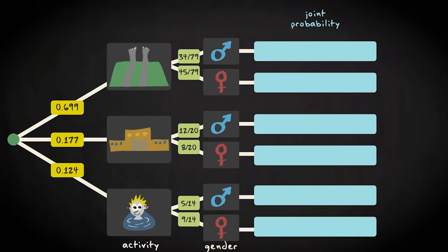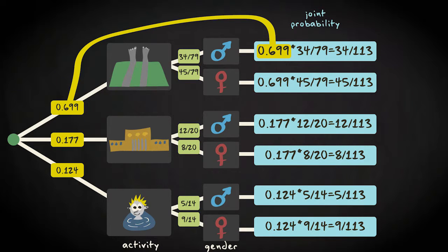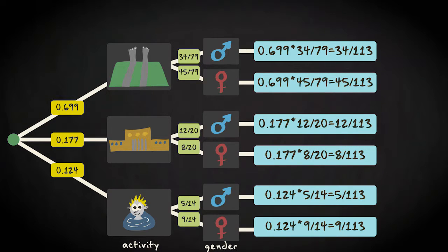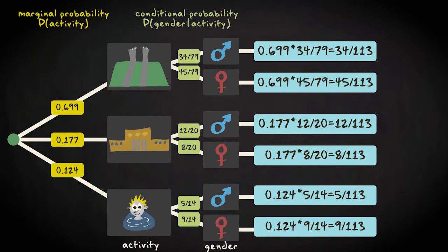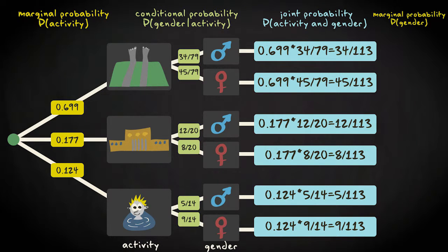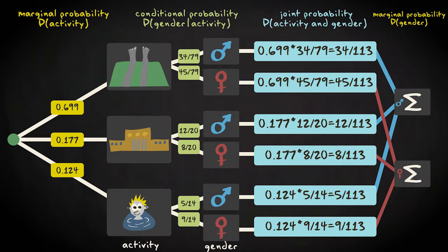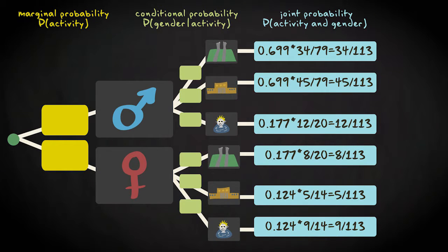The joint probabilities at the end would result from multiplying the probability per activity with the conditional probabilities of gender given activity. So in this tree diagram the probabilities at the first node are marginal probabilities for the activities, the probabilities at the second nodes are conditional probabilities for gender given the outcome of a certain activity, and the probabilities at the end of a tree are the joint probabilities. To get the marginal probabilities for gender you would have to add the respective joint probabilities. If you interchange gender and activity in a decision tree the marginal and conditional probabilities would change, but the joint probabilities would remain the same.